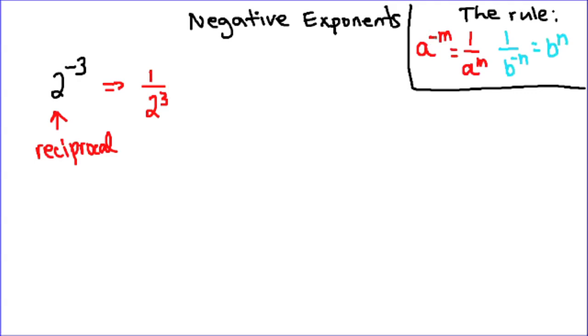So notice that we can take powers with negative exponents in the numerator, if you think about this as a fraction, and turn them into positive exponents in the denominator. And we can also take powers with negative exponents in the denominator and move them to positive exponents in the numerator.